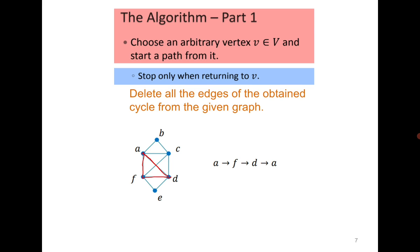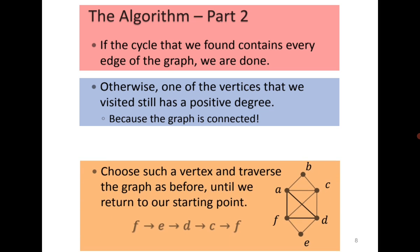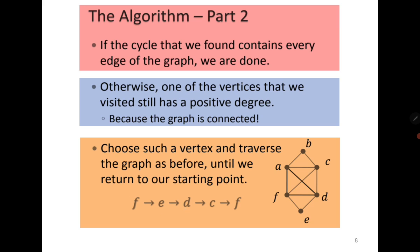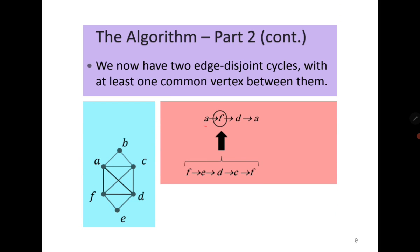Now delete all the edges of the obtained cycle from the given graph. After deleting the edges—when we are deleting the edges, we are not deleting the vertices—but yes, after deleting the edges, if it is an isolated vertex, we can delete it. Now since each vertex has an even degree, there was a cycle and therefore it happened. Now choose any of the vertices from this cycle which still have a positive degree after deleting this edge. Let's say that I choose another cycle: F, E, D, C, F. So this is the idea. I started with A, F, D, A. Then I replaced F by F, E, D, C, F.